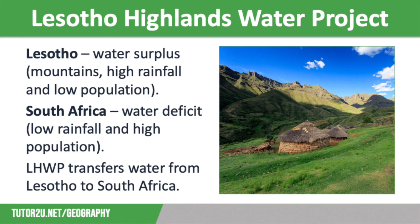Lesotho is a mountainous country that receives a high level of precipitation and has a low population of just 2.3 million people. Therefore it has a water surplus, whereas South Africa has a population of 60.4 million and uneven rainfall, giving it a water deficit, with the west and south being particularly dry. 200 kilometres of tunnels divert 40 percent of the water in the Senku River Basin in Lesotho into the Vaal River system in South Africa, and 2,000 million cubic metres of water is transferred every year.